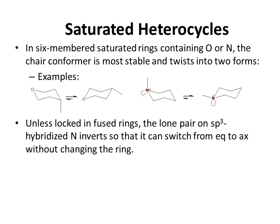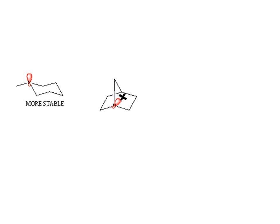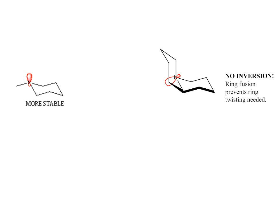Unless locked in fused rings, the lone pair on sp3 hybridized nitrogen inverts so that it can switch from equatorial to axial without changing the ring. The actual ring doesn't change at all, but the nitrogen lone pair inverts, forcing the methyl group to go from axial to equatorial. When the lone pair on nitrogen is axial, that's the most stable orientation. In a fused ring, no inversion is possible because the lone pair can't fit inside the ring, and ring fusion also prevents ring twisting needed for the lone pair to invert.